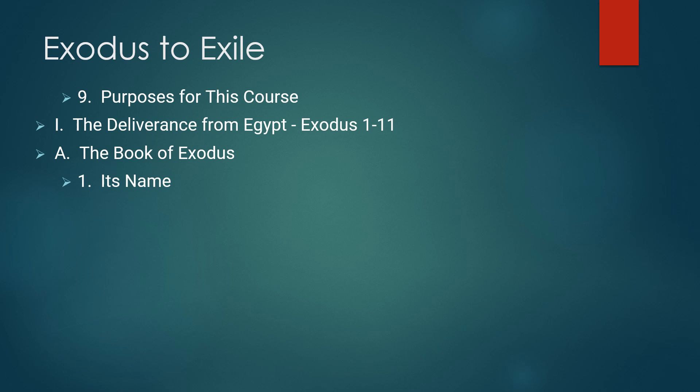The title for the book in Hebrew tradition is Ve'ele Shemot, which means 'and these are the names.' The practice in Jewish tradition for naming the five books of the Pentateuch is to take the title from the first words of the first verse of the book. If you look at Exodus in your English Bible, the first verse says 'these are the names of the sons of Israel.' So they simply take those first few words and use it for a title.